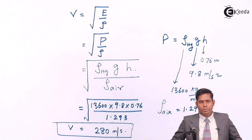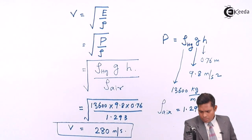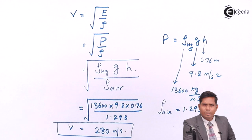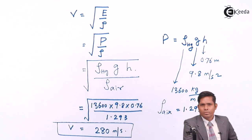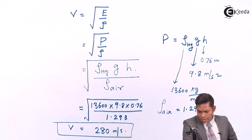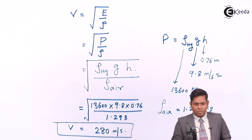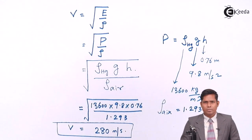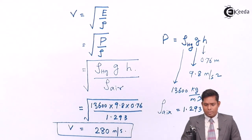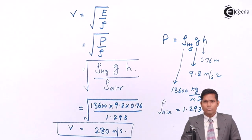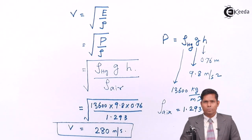However, experimentally, the speed of sound was found to be around 330–335 m/s. Newton's formula gives 280 m/s, which has about a 16% error compared to the experimental value. So there must be something wrong. A scientist called Laplace came and corrected Newton's formula for the speed of sound. That will be discussed in the next video — how Laplace modified or corrected Newton's formula.